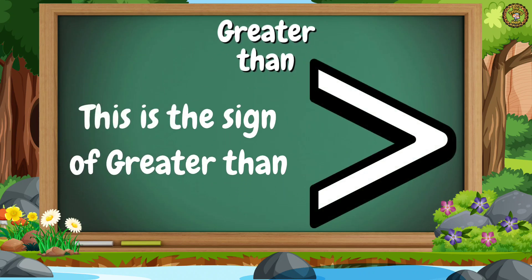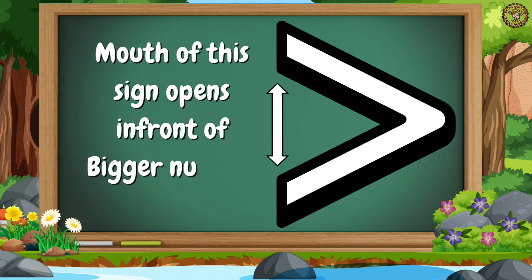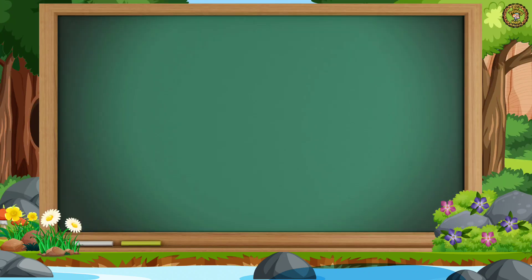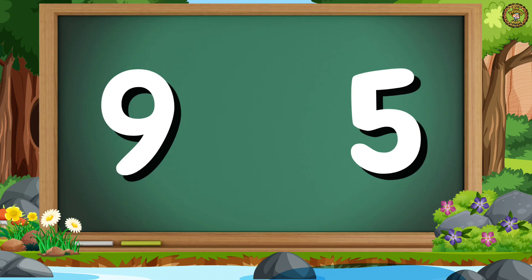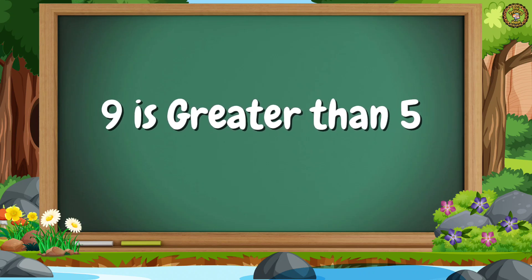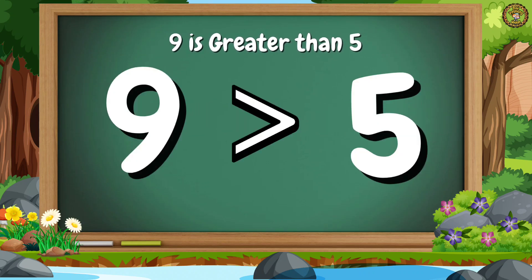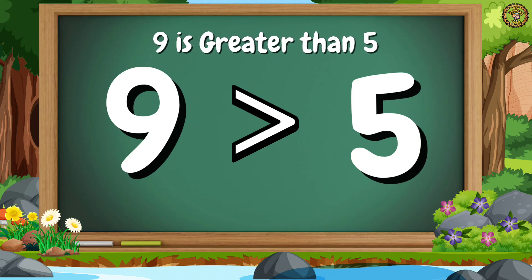This is the sign of greater than. The mouth of this sign opens in front of the bigger number or quantity. Let's understand with an example. Let's take numbers 9 and 5. We can say that 9 is greater than 5, so here we use the sign of greater than between them because 9 is greater than 5.